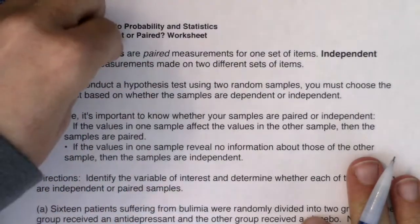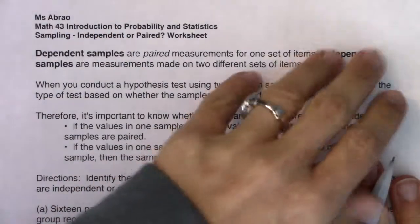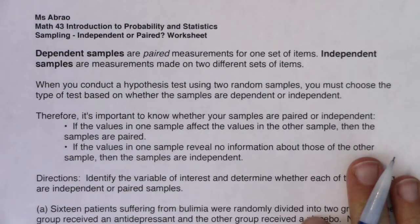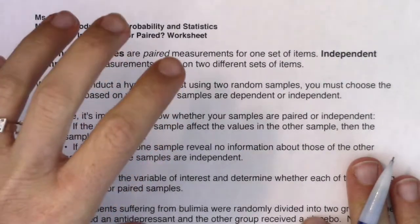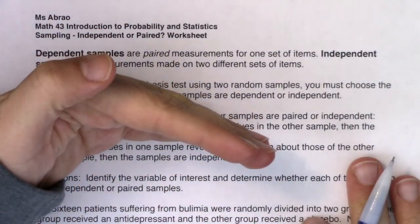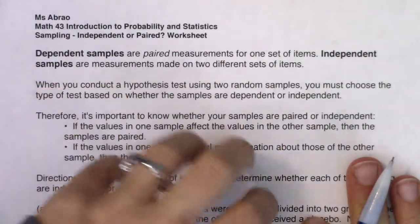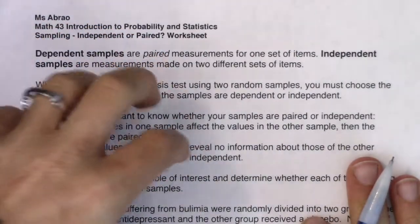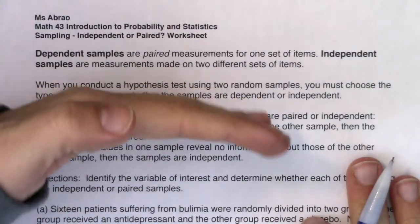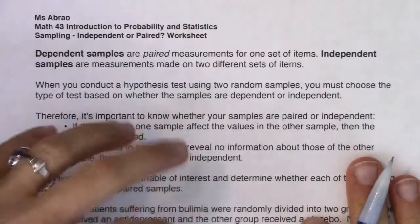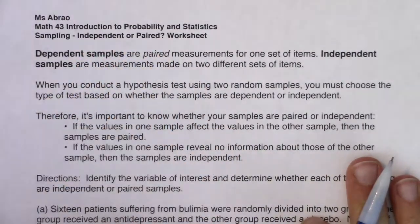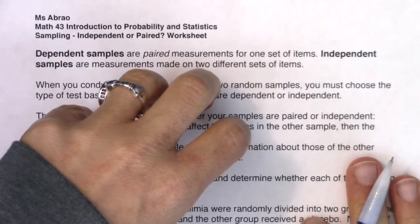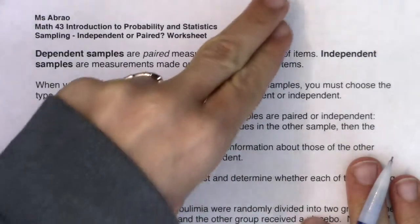If we have two independent samples, we do a certain type of procedure. If they are two paired samples, we do a different procedure. So you'll have to make this decision early on. You're going to read your problem, decide if you're in mean land or proportion land, then ask yourself how many samples you're dealing with. If the answer is two, you further split: are they independent or are they paired?